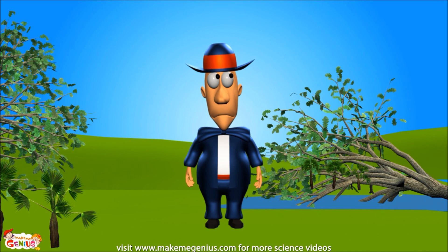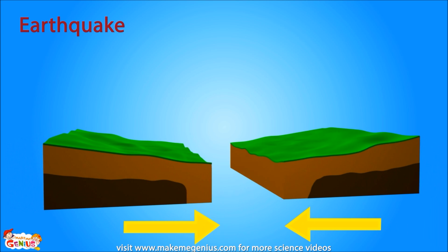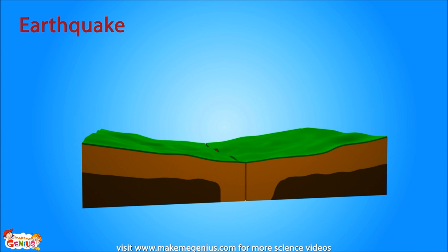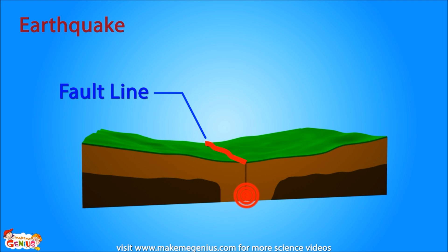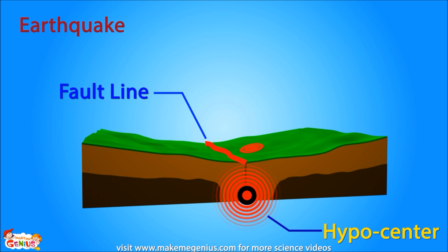Do you want to know why earthquakes happen? How do tectonic plates collide with each other? Sometimes the plates get locked together while moving. This happens at the plate boundaries, where two different tectonic plates meet. These boundaries are called fault lines. As the plates try to move, a lot of friction and stress builds up. Eventually, when the blockage gives way, this stored energy is released. The point beneath the Earth's surface where it is all stored is called the hypocenter. When the released energy reaches the surface, we feel the Earth shaking. This is an earthquake. The point on the surface which is directly above the hypocenter is known as the epicenter. An earthquake is strongest at the epicenter.